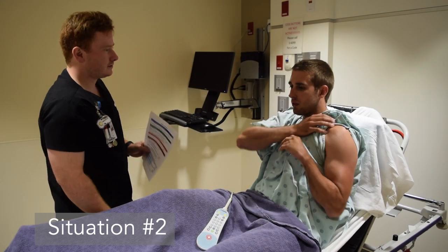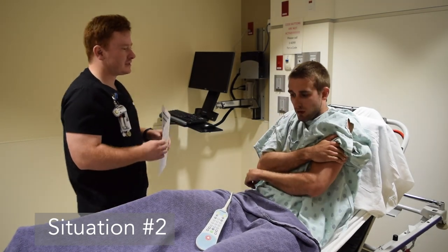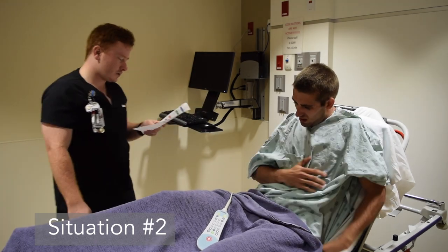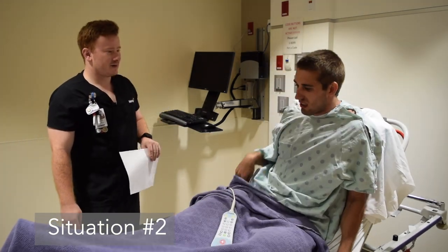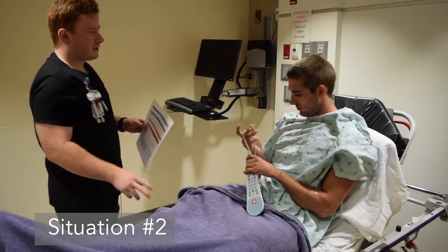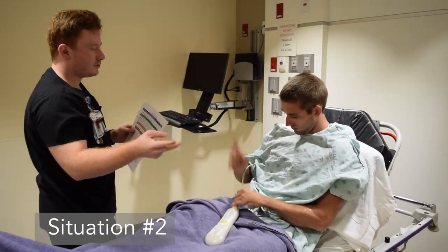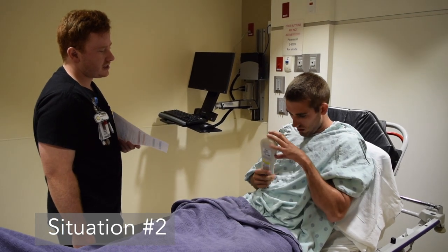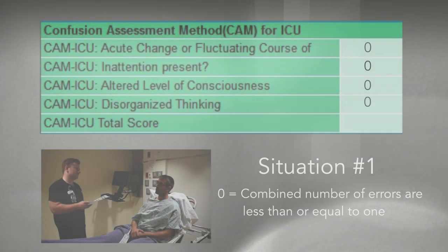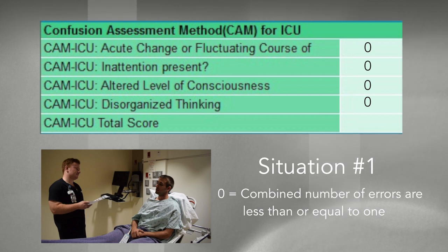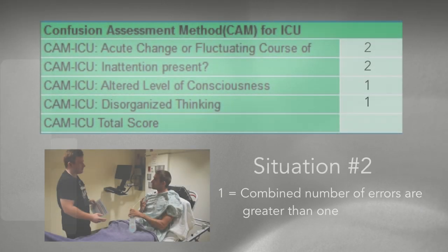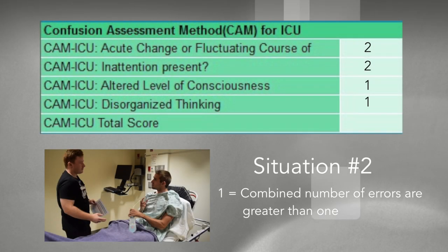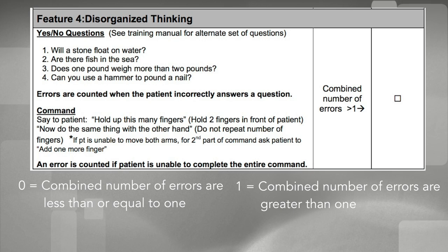In situation 2, the RN asks Cole the same yes/no questions. Cole answers 'No' to all four questions, including 'Are there fish in the sea?' The RN then asks Cole to hold up two fingers and do the same with the other hand. For disorganized thinking, patient 1 scores a 0 because the combined number of errors is less than or equal to 1. Patient 2 scores a 1 because the combined number of errors is greater than 1. The patient will either pass with a 0 or not pass with a 1.